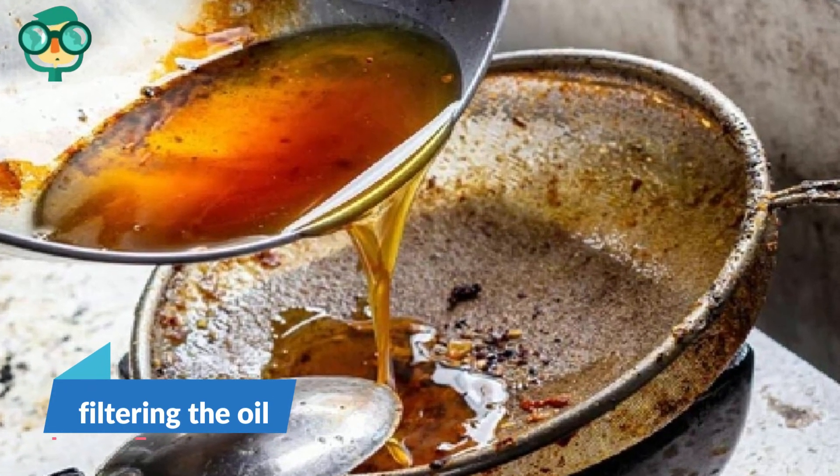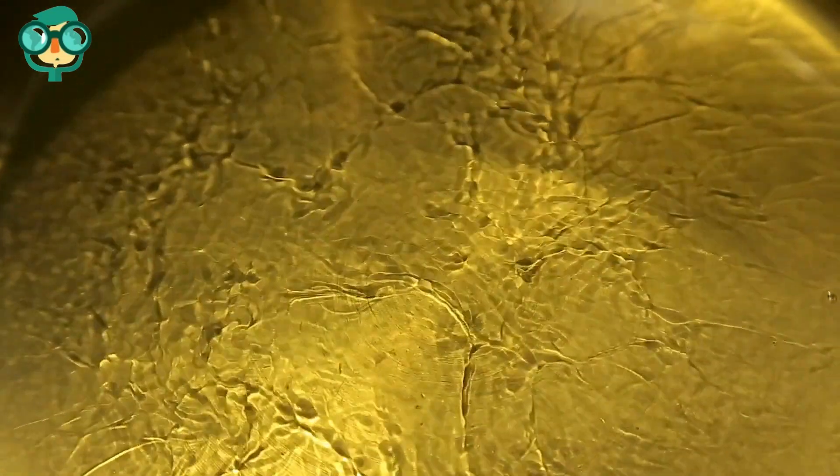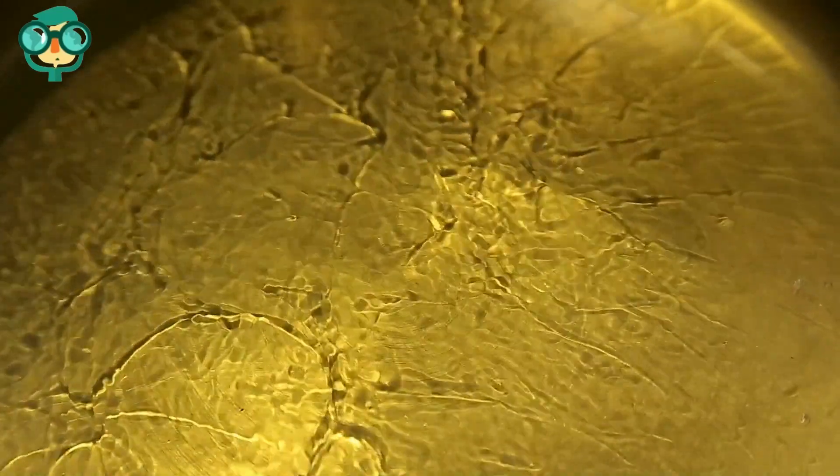The second step is filtering the oil. Heat the oil to 95 degrees Fahrenheit. Pour your used oil into a large, clean cooking pot, and heat it to 95 degrees Fahrenheit over an electric burner to make the oil easier to pour for filtration.